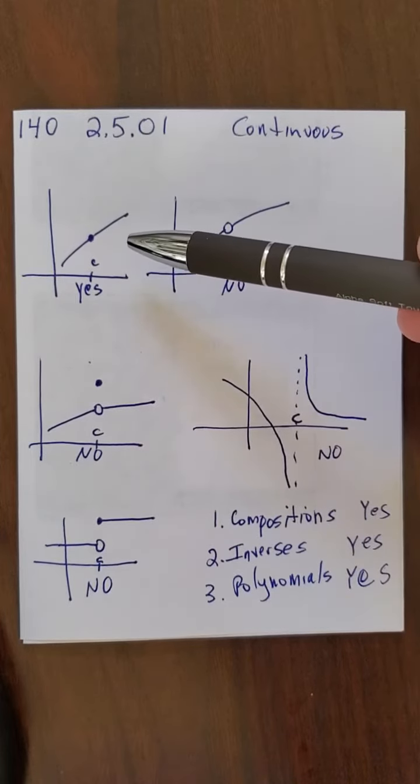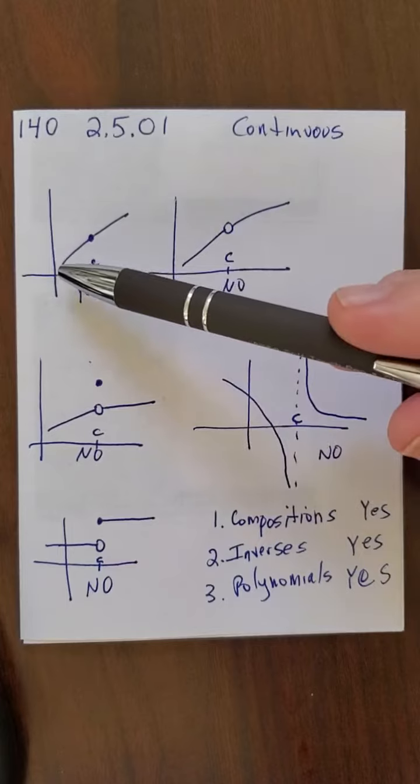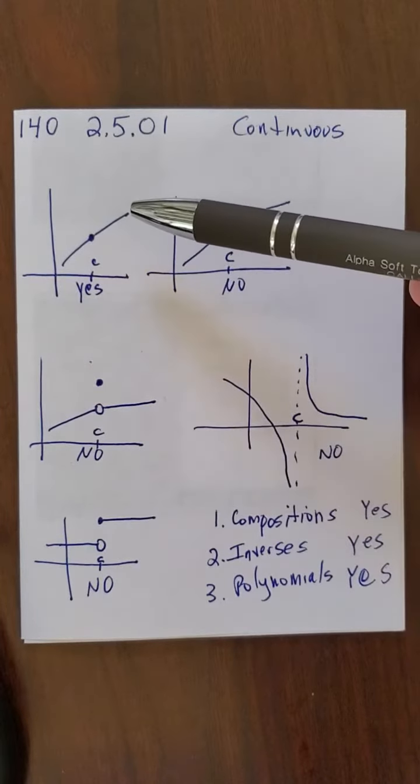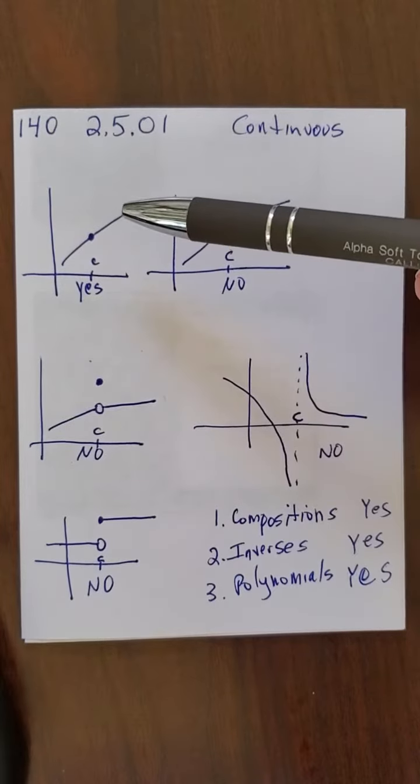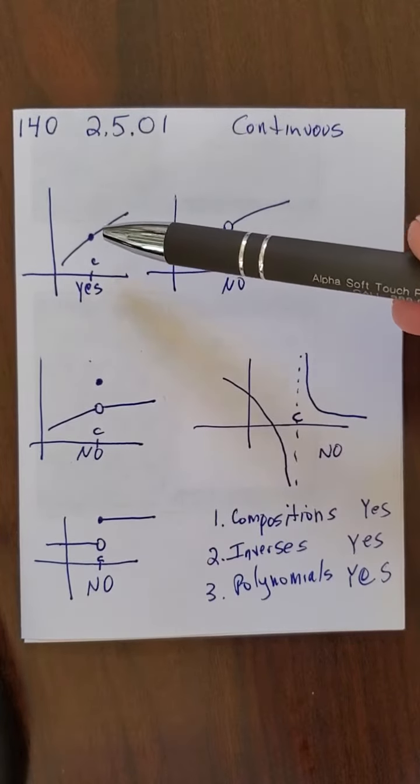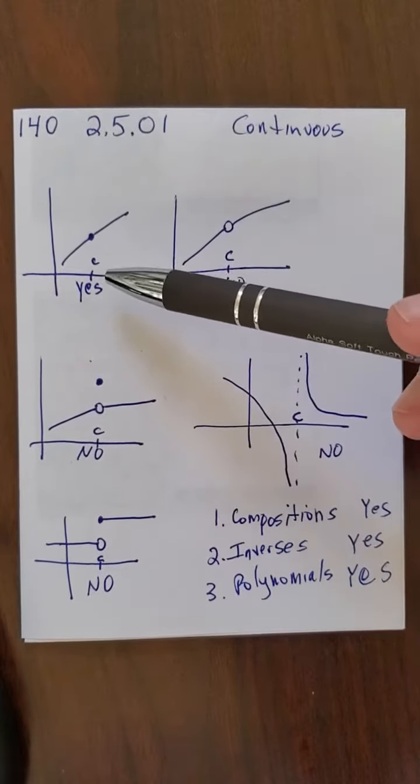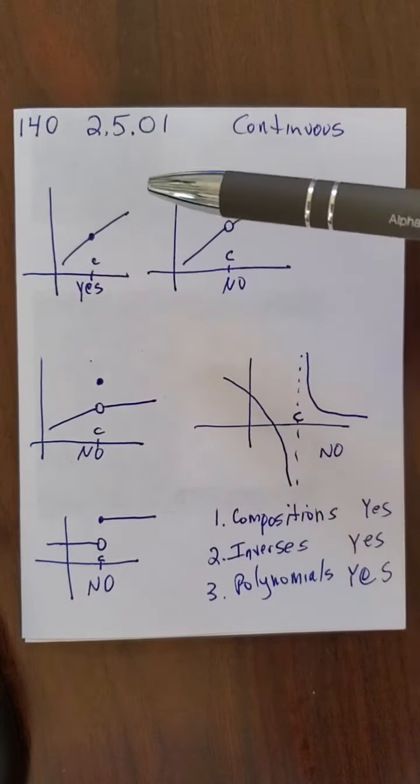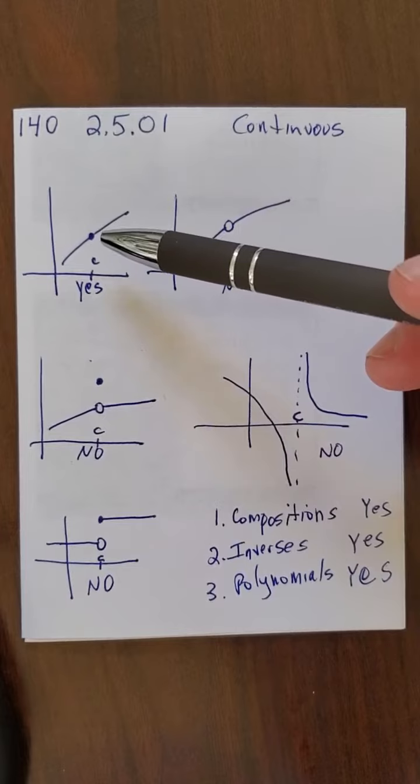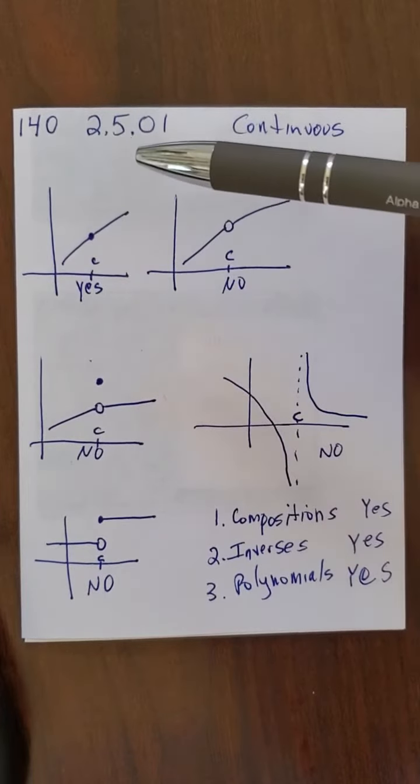But basically, in simple terms, a function is continuous if you could draw the function without taking your pen off the paper. That's pretty much the definition officially, you know, more or less. I mean, it's not the official definition, but for most intents and purposes. This function is continuous at the point C, because it goes, no problem. Now, in order for a function to be continuous, there are three things that have to happen.